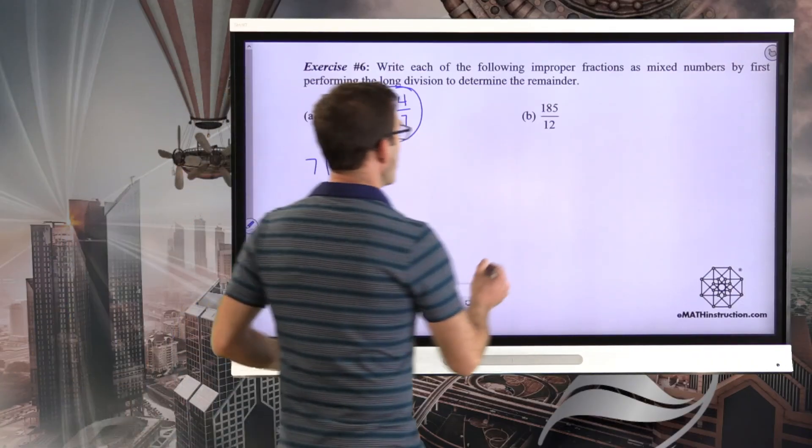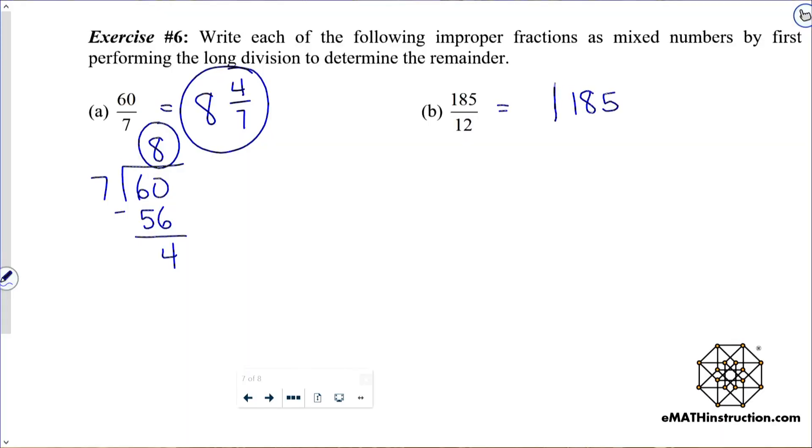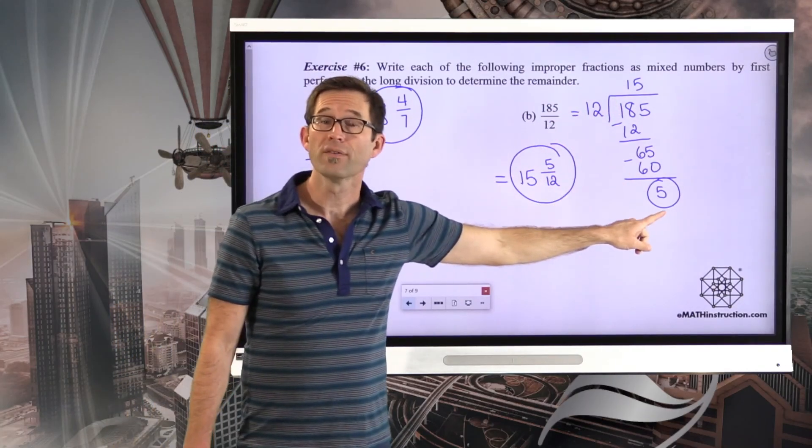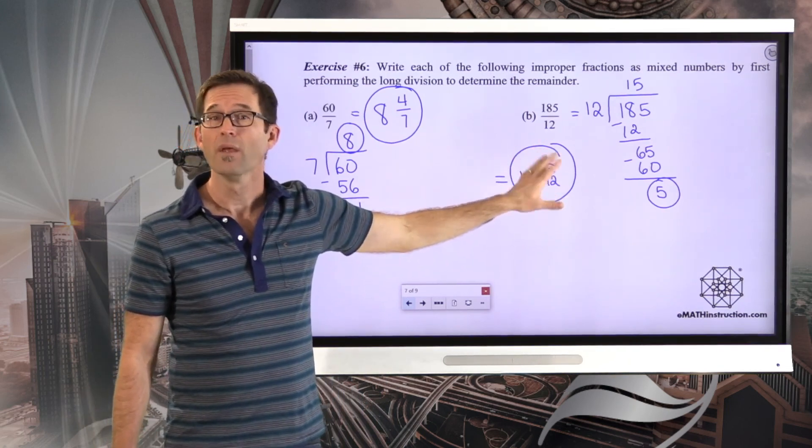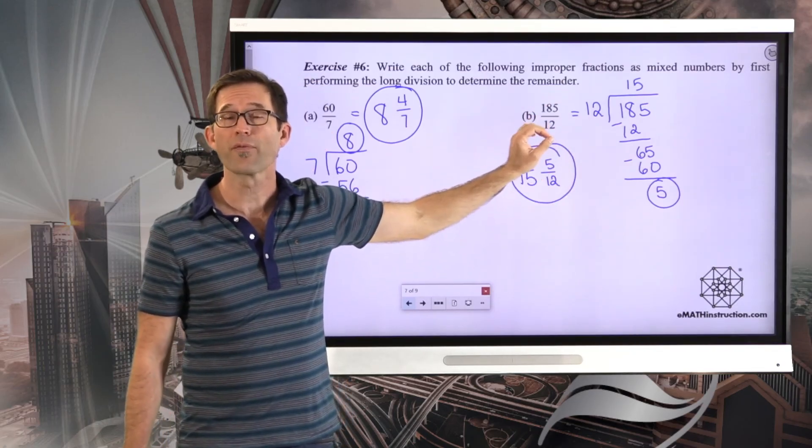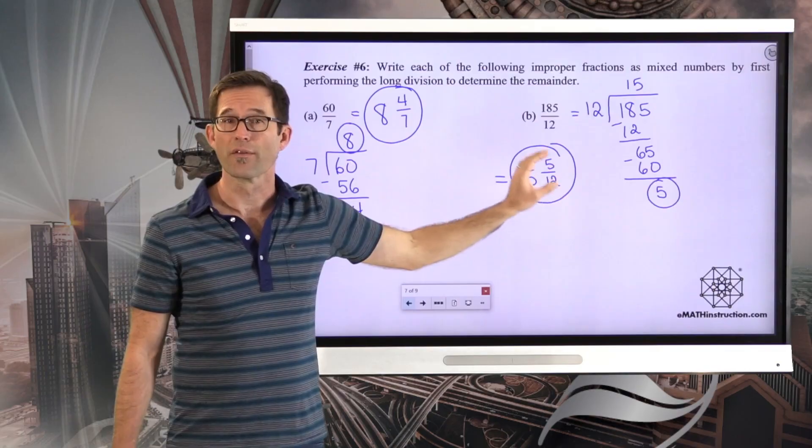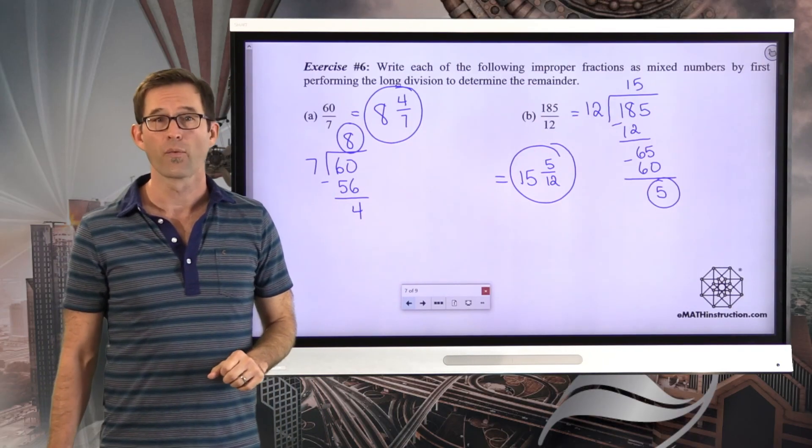All right, let's go through it. 185 divided by 12. 12 goes into 18 one time. Do the subtraction, I'm left with 65. 12 goes into 65 five times, 5 times 12 ends up being 60. Subtract, and we get a remainder of 5. That means 185 twelfths can be written as 15 and 5 twelfths. So the 15 is our quotient. The 5 is our remainder, and so we get 15 and 5 twelfths. So whenever we've got a fraction that's an improper fraction, we can change it to a mixed number by simply doing the division, finding that quotient, and then the remainder becomes the numerator in the fraction that hangs on at the end.